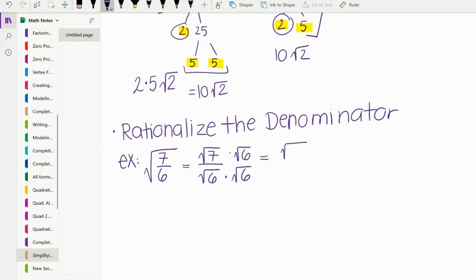This would end up being root 42 over 6. Then you want to ask, can we go further with 42? I know 2 times 21 is 42. 2 is prime, so we're good there. 21, I know 3 times 7. Then I end up getting 3 prime numbers. That means I am done. So it would just be root 42 over 6.